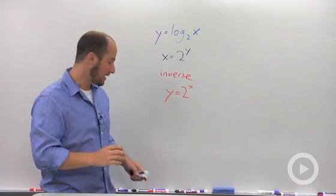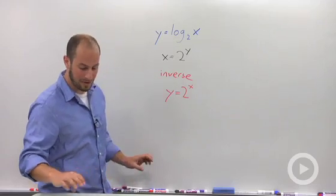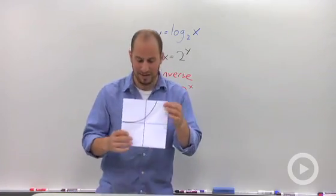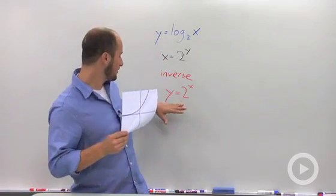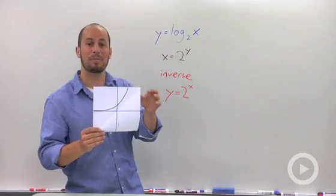We know what that graph looks like. And for this I have a little prop for you. We have the graph of y equals 2 to the x looks something like this.